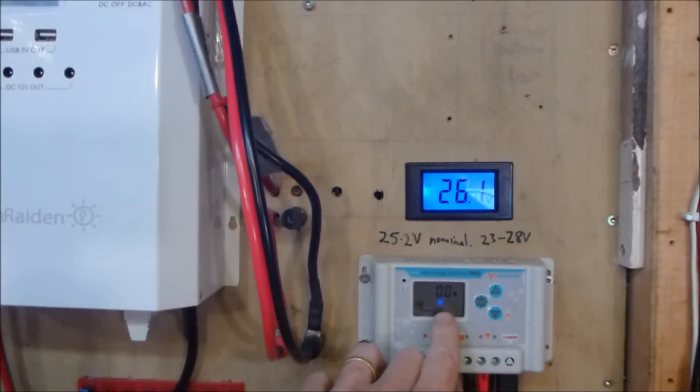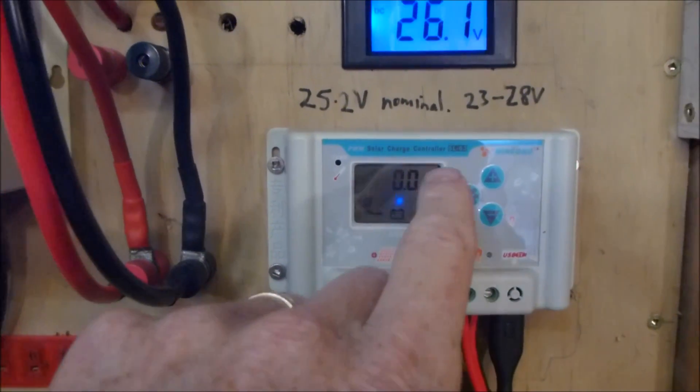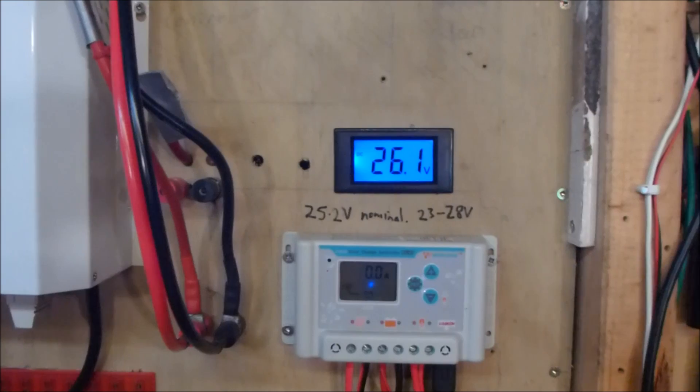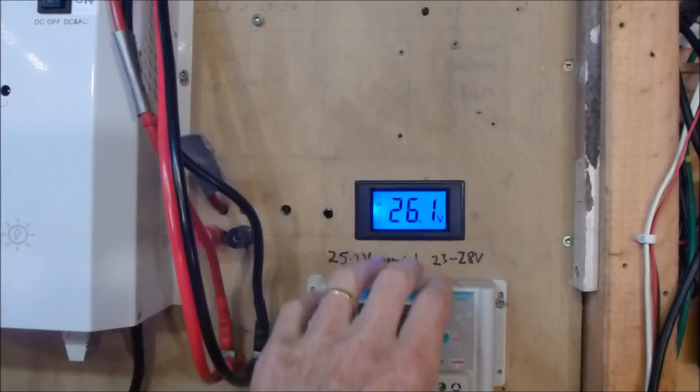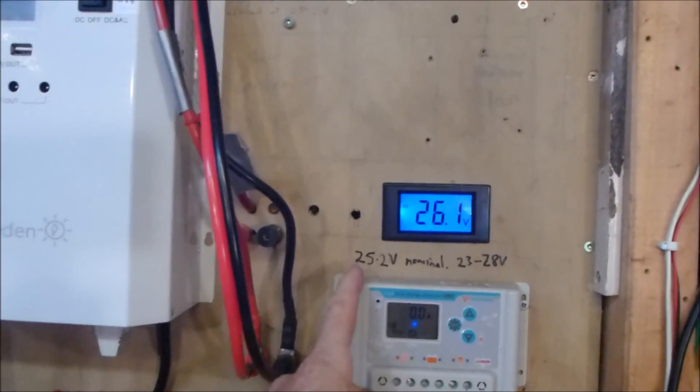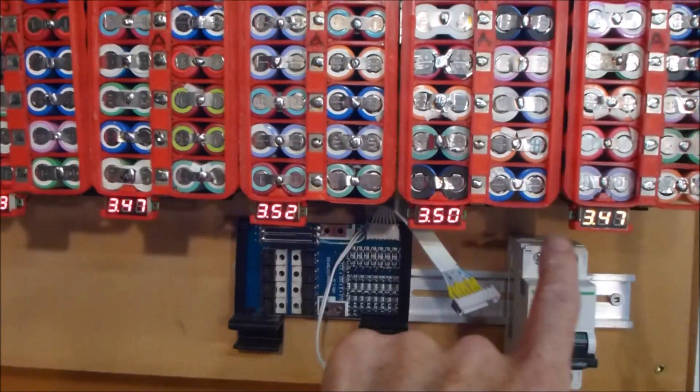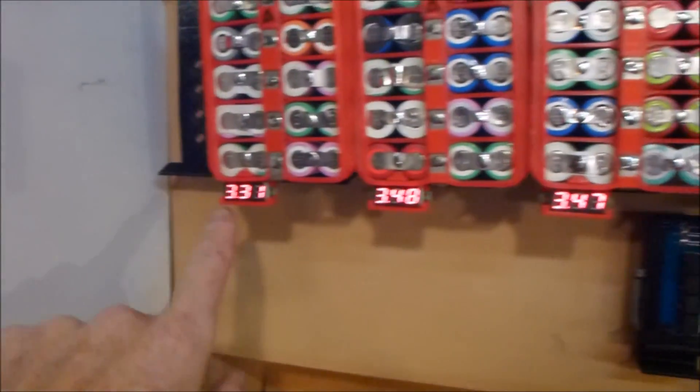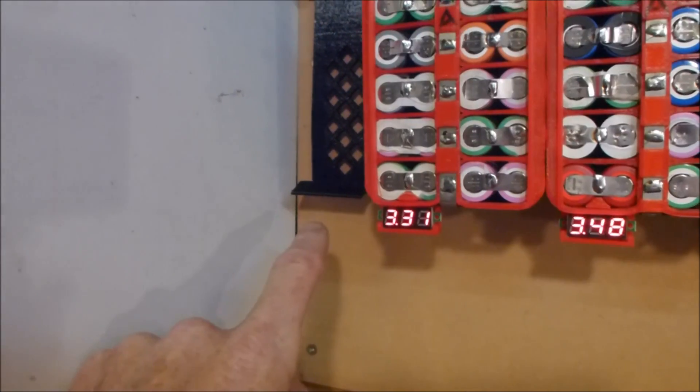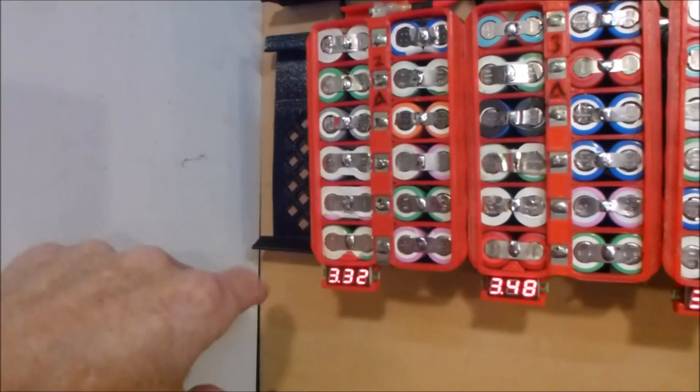And then the other thing that was happening was I was getting no current shown on my charge controller from the solar panels. That lead me to wonder if the charge controller had died. Then the other thing that was happening was the voltages on these groups here were pretty low, and then this pack here was below 2.4 volts. So there was something really badly wrong here.